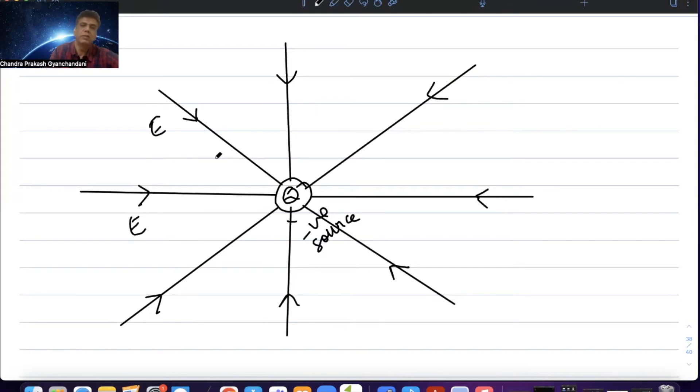The formula is k Q over r square, but in the direction it will be reversed. Negative sources will produce toward it, positive sources will produce away from it.